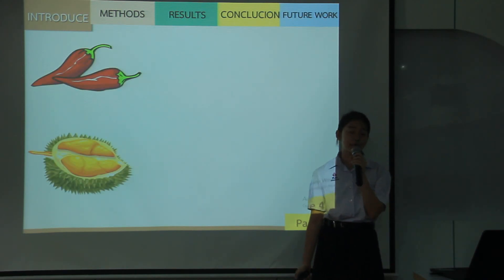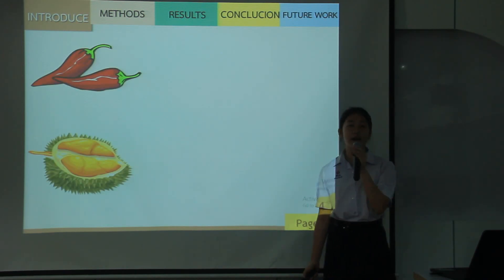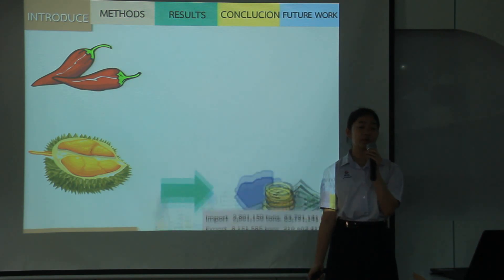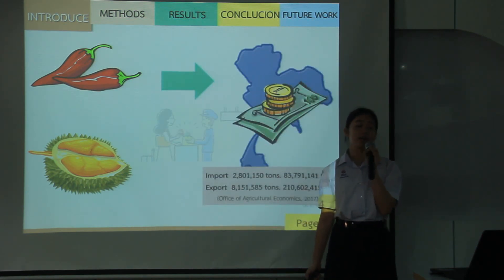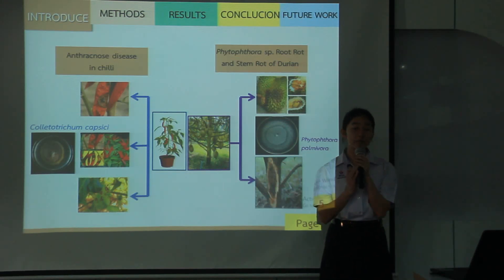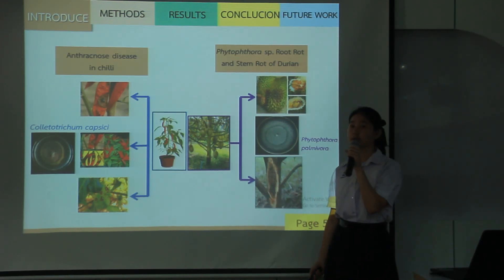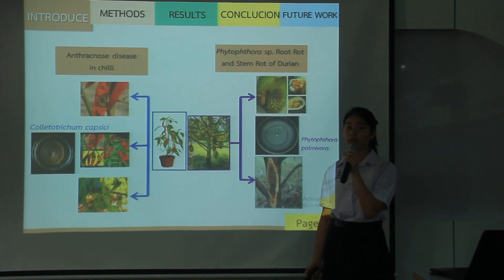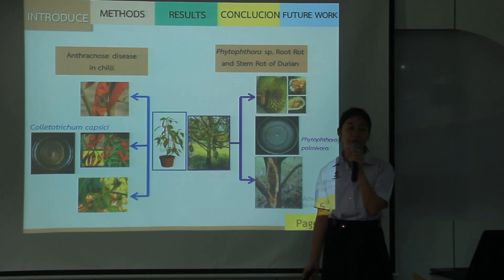The plants I chose to study in this case are chili and durian, because both are economic crops that generate income for Thailand. The main problems involving these plants are anthracnose disease in chili, caused by Colletotrichum capsicum, and root rot and stem rot in durian, caused by Phytophthora palmivora.